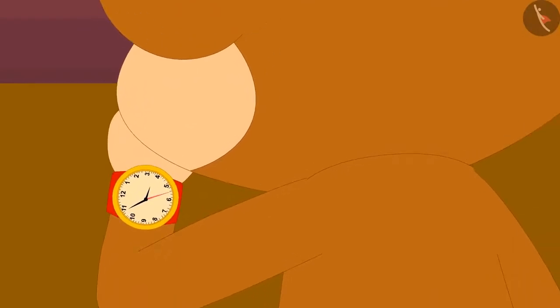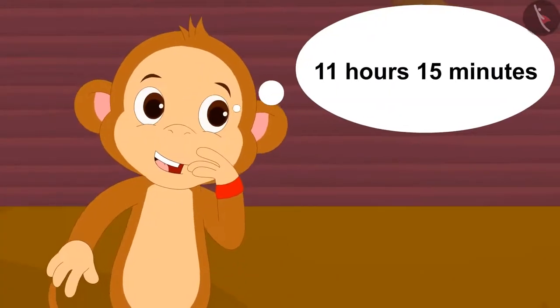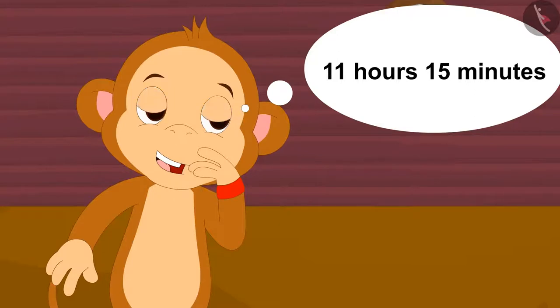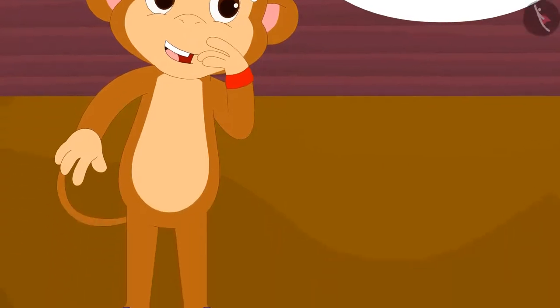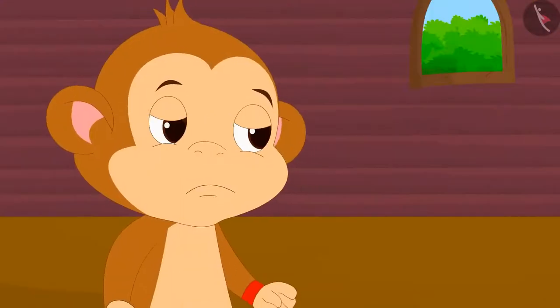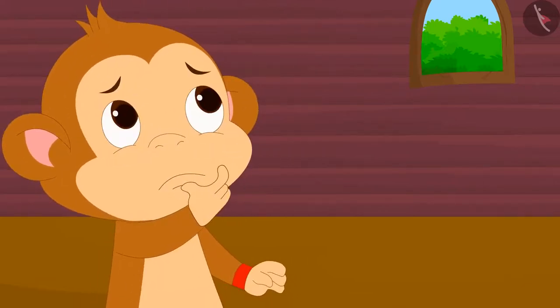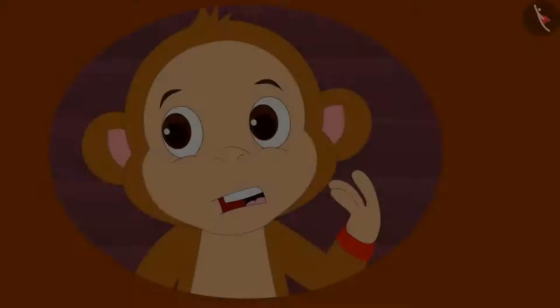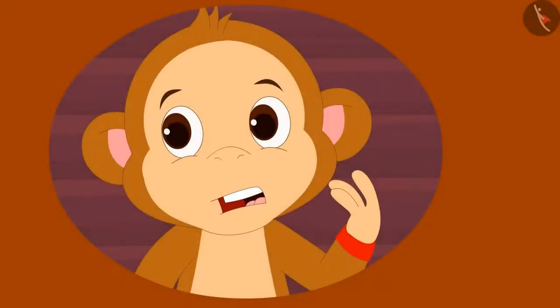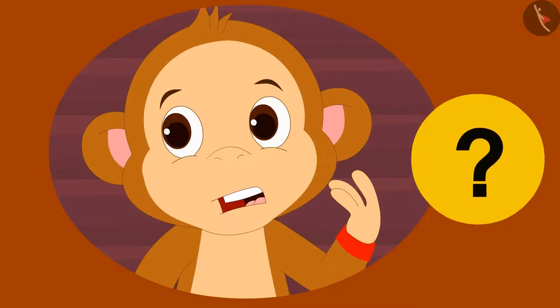Babban thought that it was 11 hours 15 minutes on his watch. Thinking this, Babban quickly put on his magical shoes. He waited for a long time, but no magic happened and he stayed in his house. But why did it happen? Children, can you tell what mistake Babban has made?